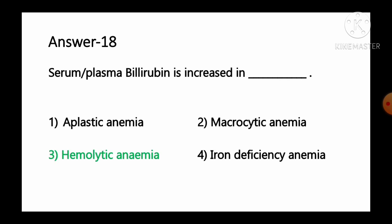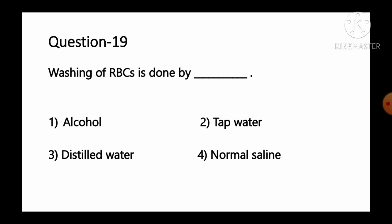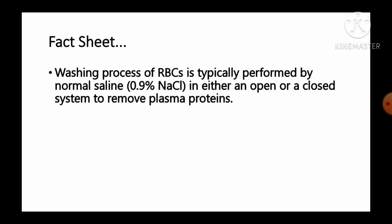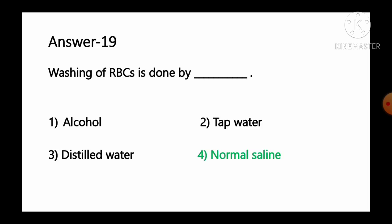Question number 19: Washing of RBCs is done by — option 1 alcohol, option 2 tap water, option 3 distilled water, option 4 normal saline. The washing process of RBCs is typically performed by normal saline, that is 0.9% NaCl solution, in either an open or closed system, to remove plasma proteins. So option number 4, normal saline, is the correct answer.